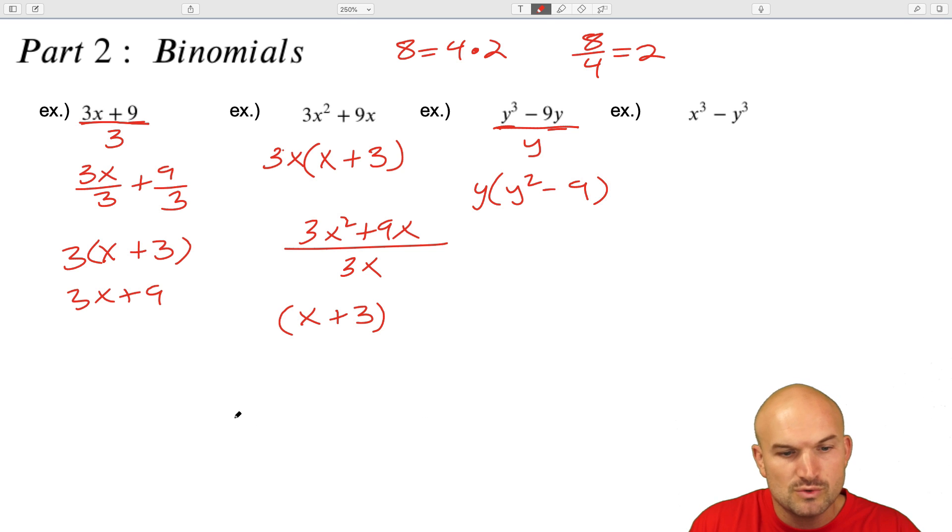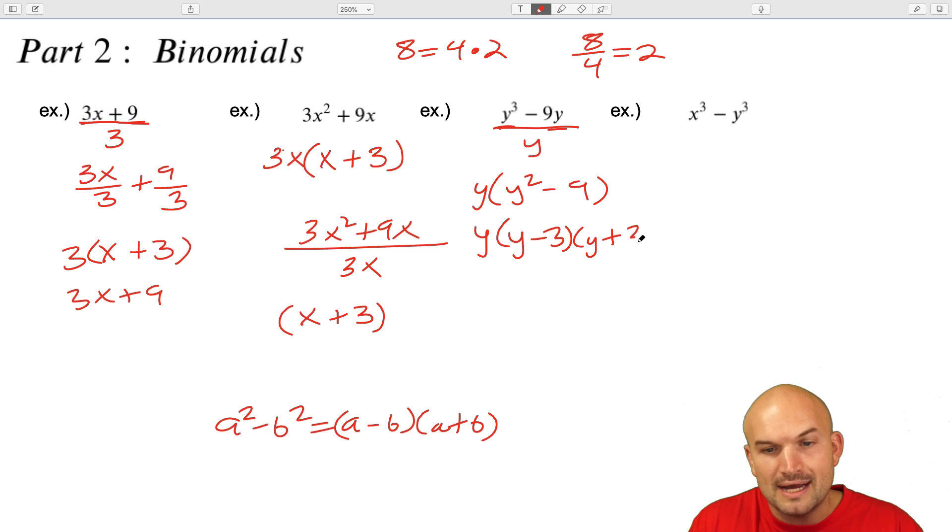So whenever you have a squared term minus another squared term, you can apply the difference of two squares. And the difference of two squares says a squared minus b squared is a minus b times a plus b. So that is going to be your factored form. And that only works when you have a square term minus another square term. So therefore, now I can rewrite this as y minus three times y plus three.